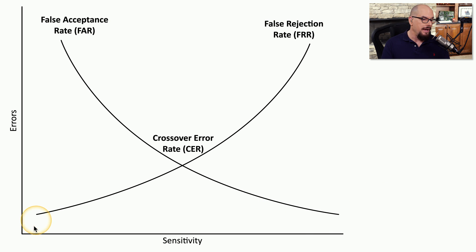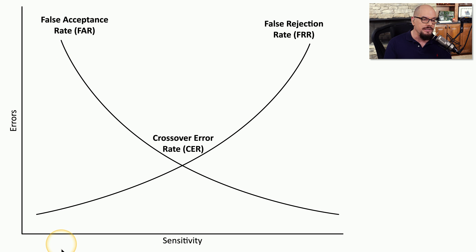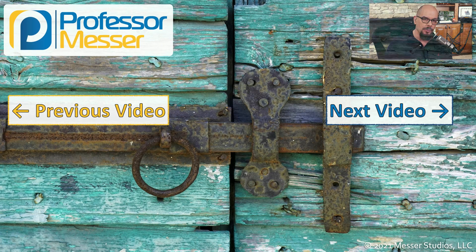Here's visually how this might work. The number of errors increases on the y-axis, and sensitivity levels are changed on the x-axis. With low sensitivity, unauthorized users may gain access — that is the false acceptance rate — and the less sensitive we are, the higher that false acceptance rate. If we increase sensitivity, it becomes more difficult for authorized users to gain access due to the false rejection rate. Somewhere in the middle, we get the crossover error rate, or CER, where the FAR and FRR meet right in the middle.